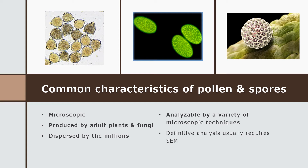Both pollen and spores are analyzable by a variety of microscopic techniques. Individual granules are not visible to the naked eye — you can only detect them in large quantities. Definitive analysis usually requires scanning electron microscopy. You may be able to characterize pollen or spores without it by using a clever combination of microspectrophotometry, polarizing microscopy, or compound microscopy, but if you need a higher level of detail to distinguish between closely related types, you'll have to revert to scanning electron microscopy.